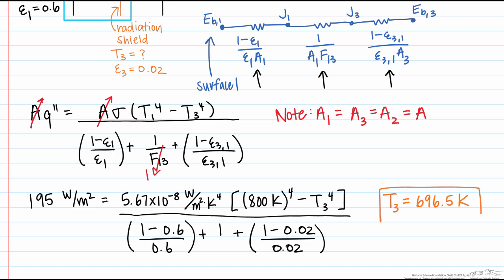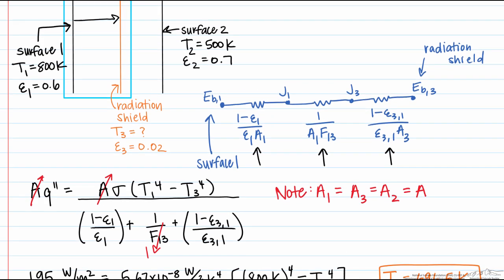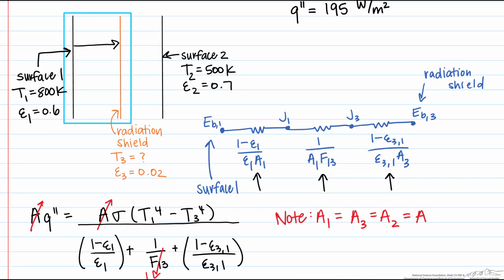Now let's take a look at it from the other side. In other words, the system between the other side of the radiation shield and the second surface. So let's see what that circuit looks like.